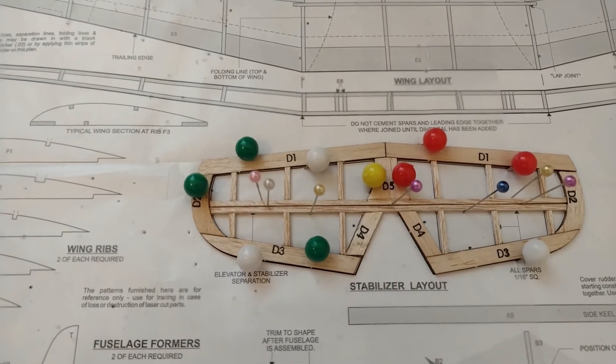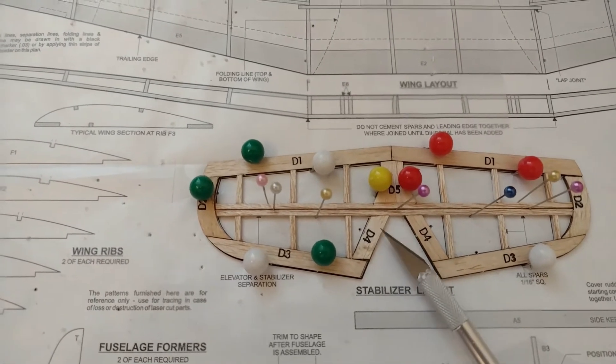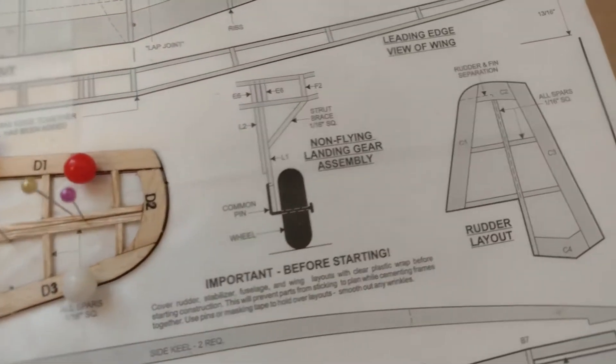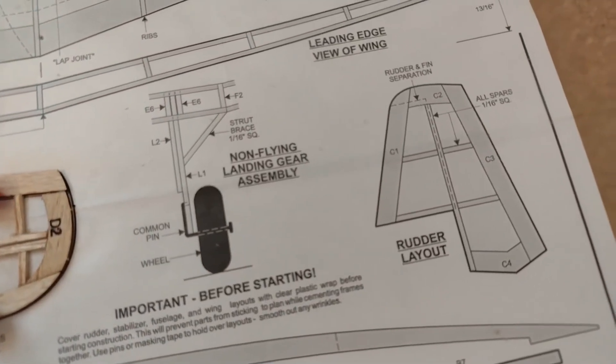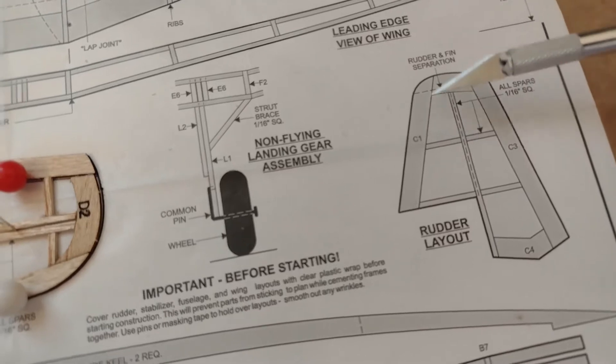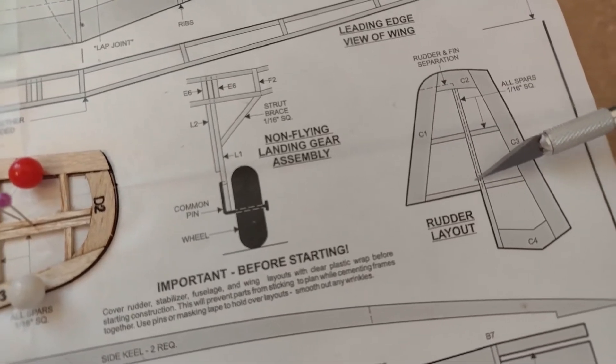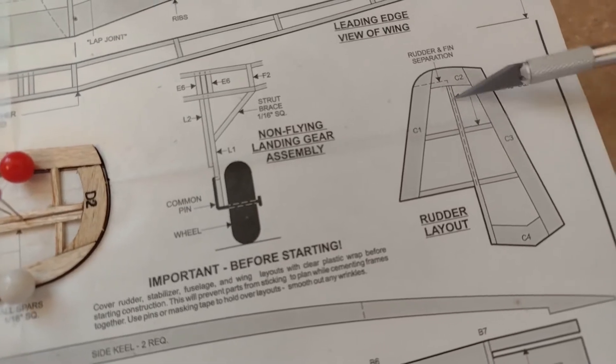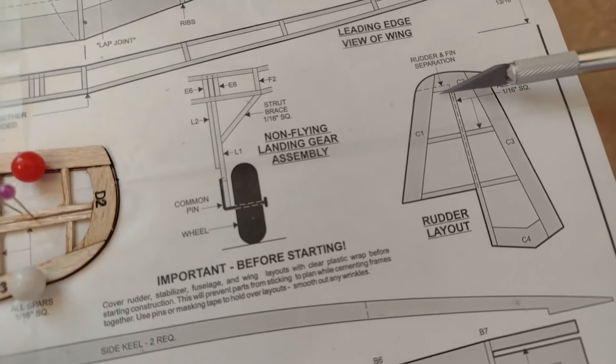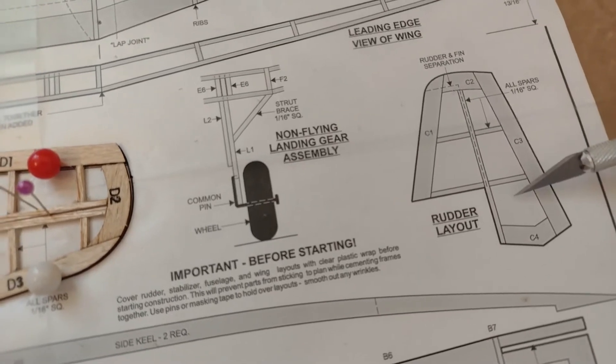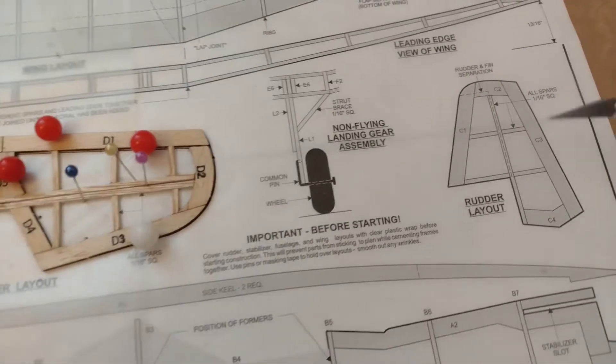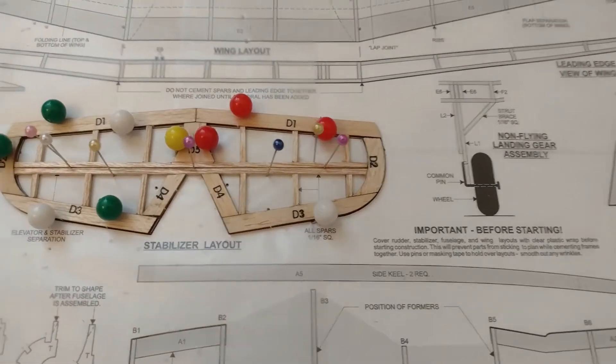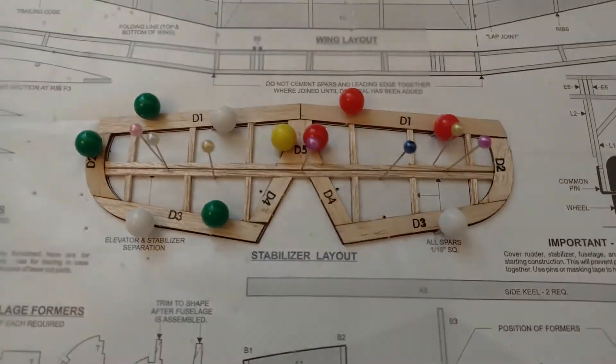Next is the vertical rudder. I'm going to do the same, putting one extra spar so I can put in the hinges and make this whole piece movable. Then we'll go to the fuselage, but that'll be step by step. Thank you once again for tuning in and I'll keep you posted.